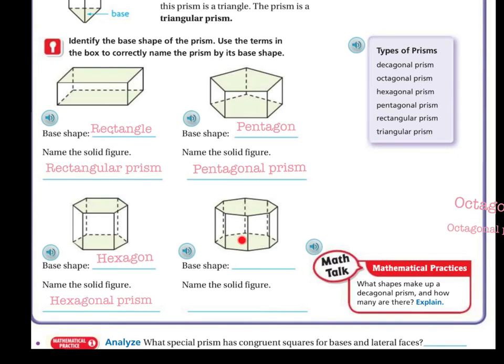Looking at the next one, my base shape, it's got eight sides, and remember eight sides is an octagon. So my solid figure is called an octagonal prism.